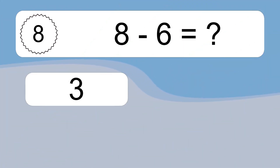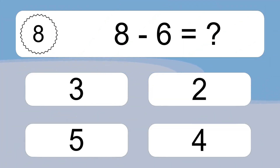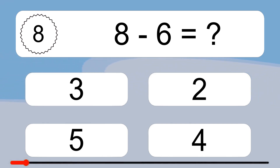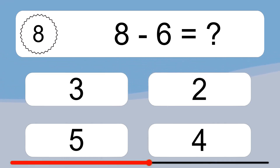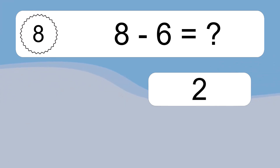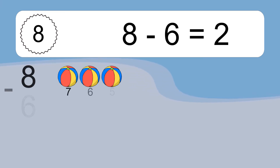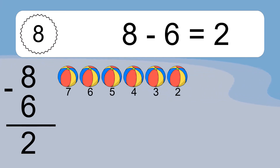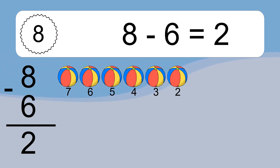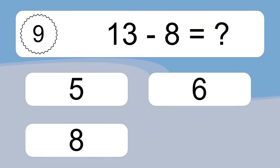8 minus 6 equals what? 8 minus 6 equals 2. Let's count it. 7, 6, 5, 4, 3, 2.